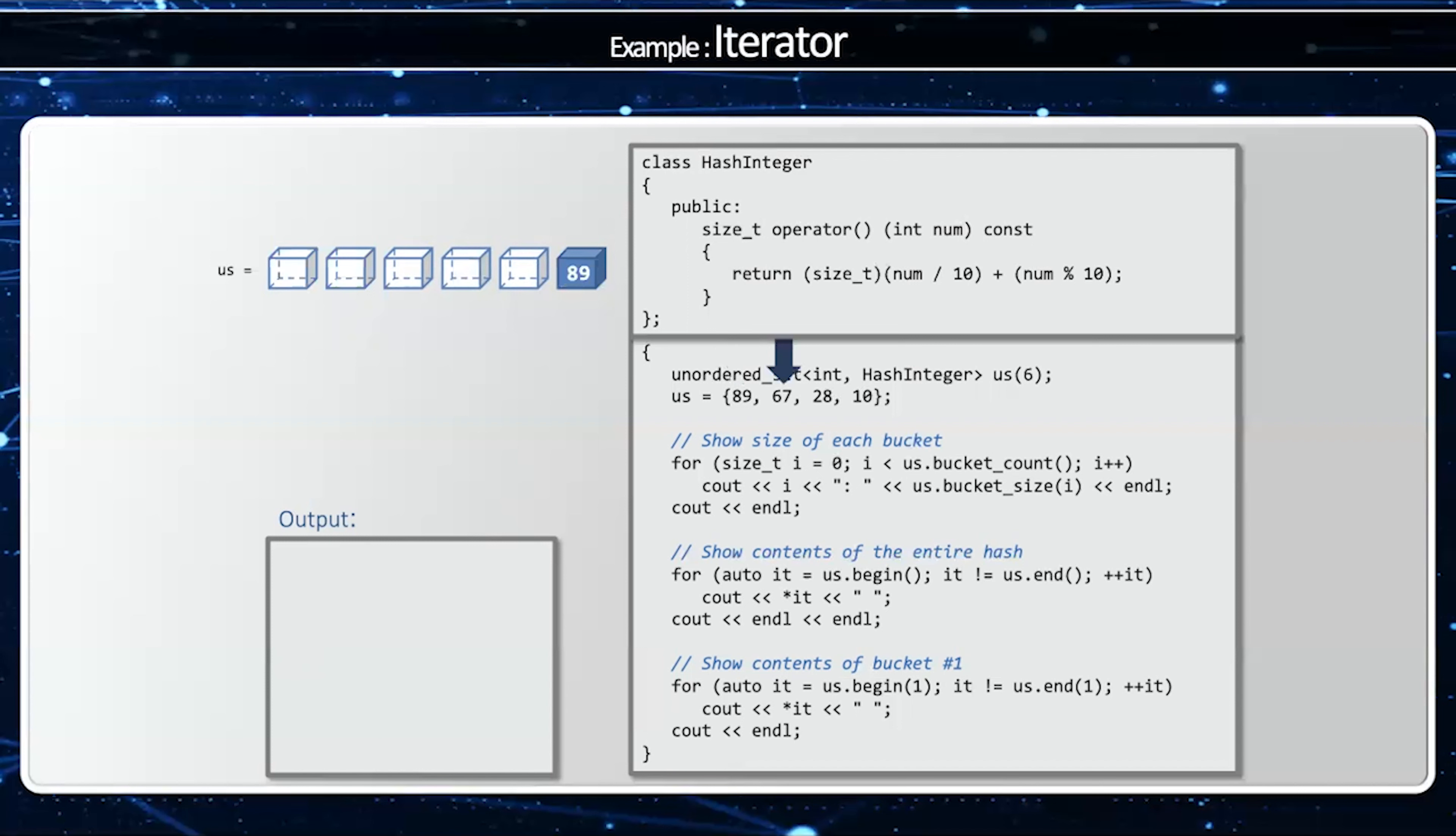67, 6 plus 7 is 13. Mod 6 will give me 1. 28, 2 plus 8 is 10. 10 mod 6 gives me 4.